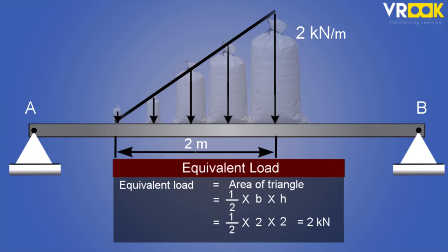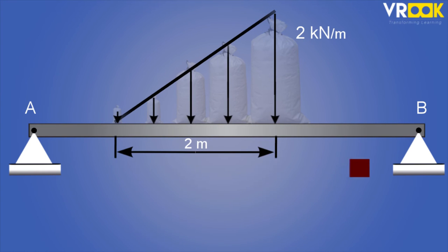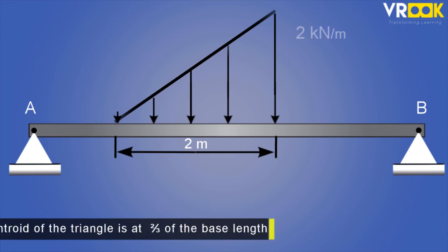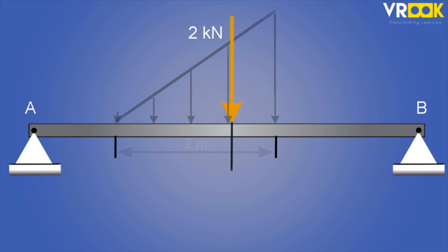The position of this load will be along the centroid of the triangle. Centroid is nothing but geometrical center of the object. We will learn about it in our next course. So the centroid of the triangle is at two-thirds of the base length or it can be at one-third of the base length from the other end. In this case we consider at two-thirds of base length. So the point load of 2 kilonewton will act along the centroid. You will understand these forces when we solve problems in the upcoming section.